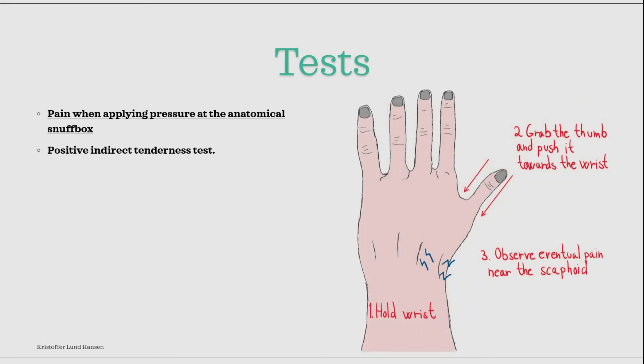Indirect tenderness is also a good indicator for fractures in general. In the case of scaphoid fracture, it will be positive when you hold the wrist still, then grab the thumb and push the thumb inwards towards the wrist. When doing this test, it should cause pain close to the area of the fracture; however, it is not always positive.